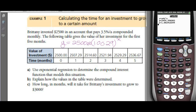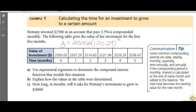It's growth because the base is greater than 1. So we take 1.0029 minus 1, which gives 0.0029. To change that to a percent, multiply by 100 — move the decimal over 2 — and we get 0.29%.